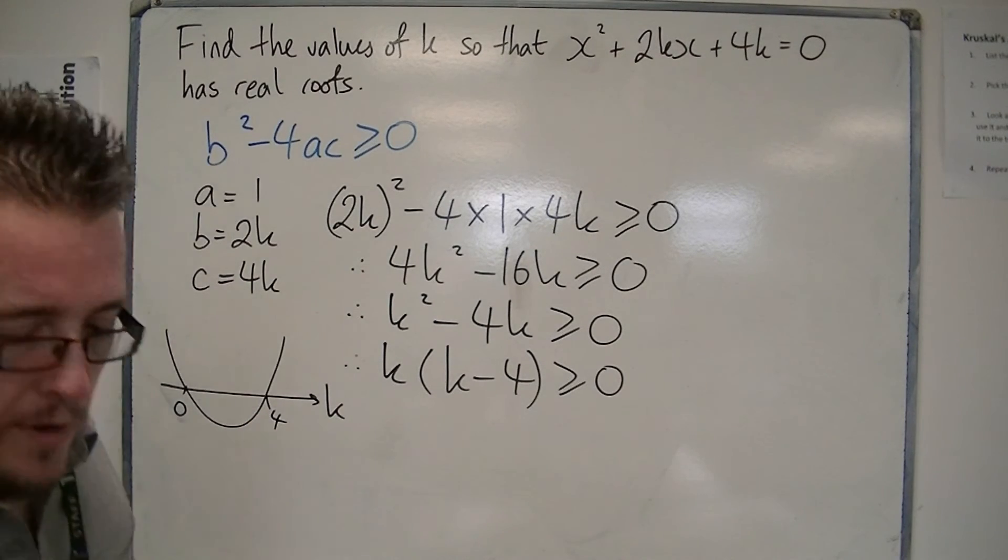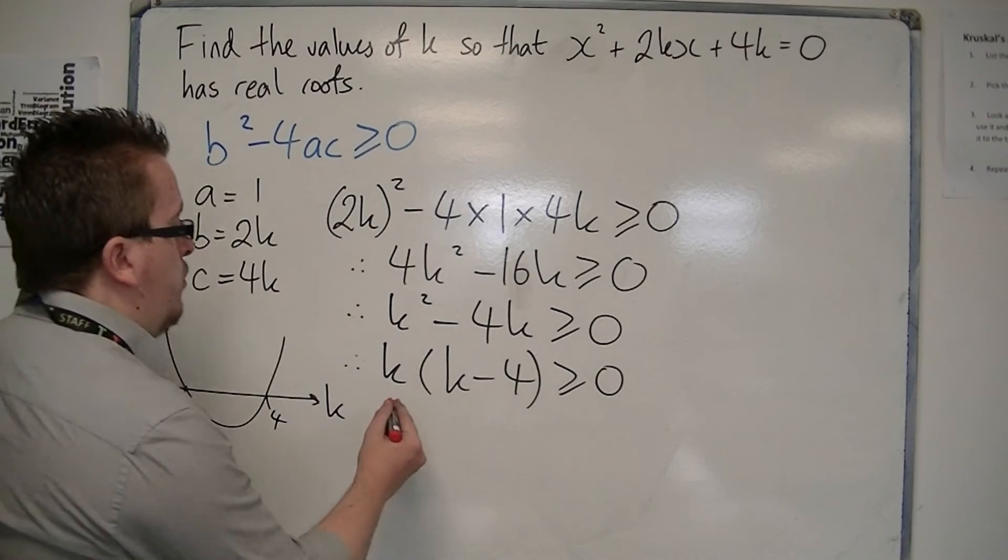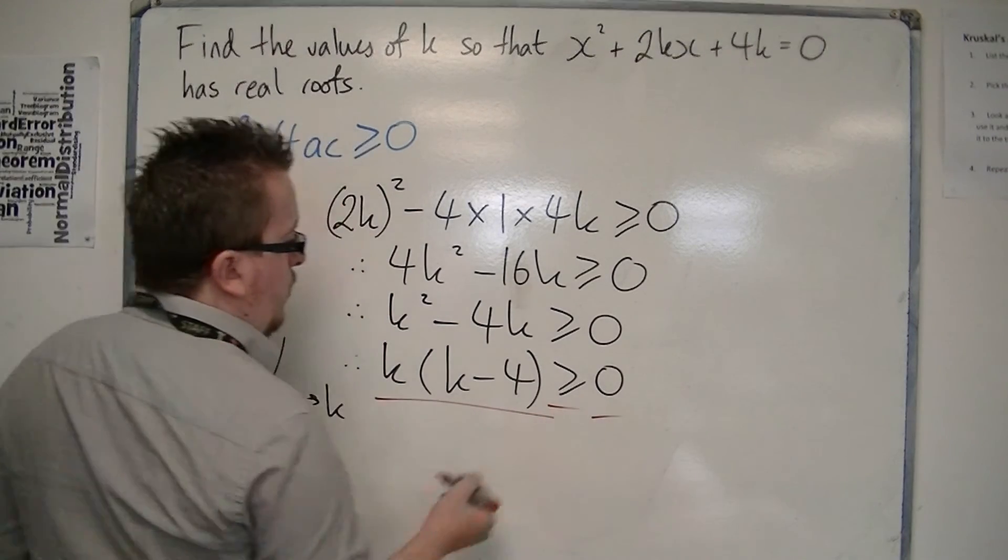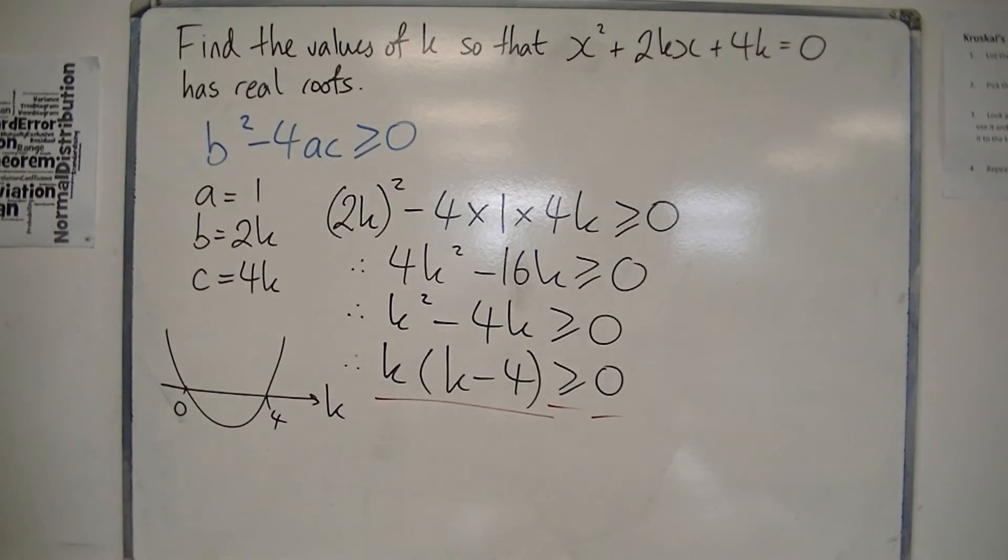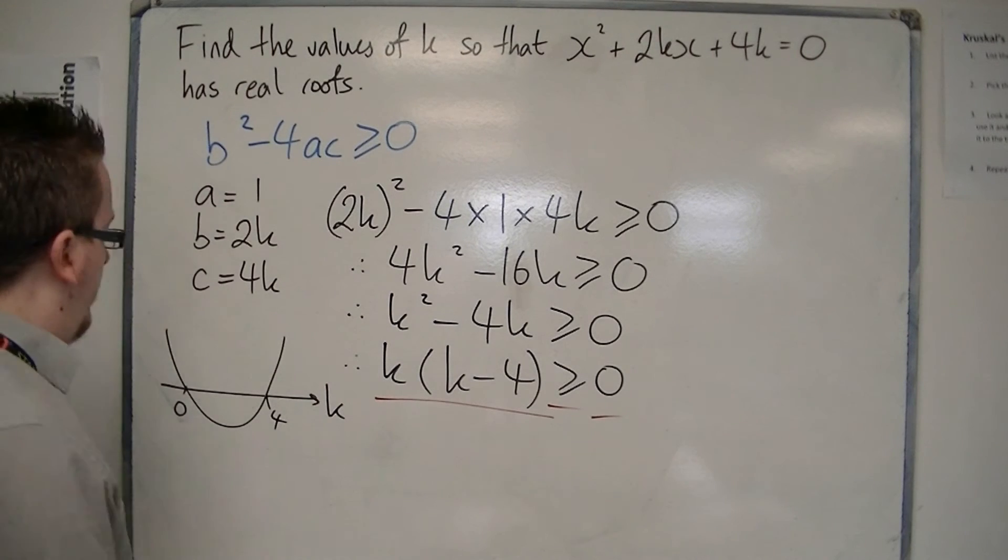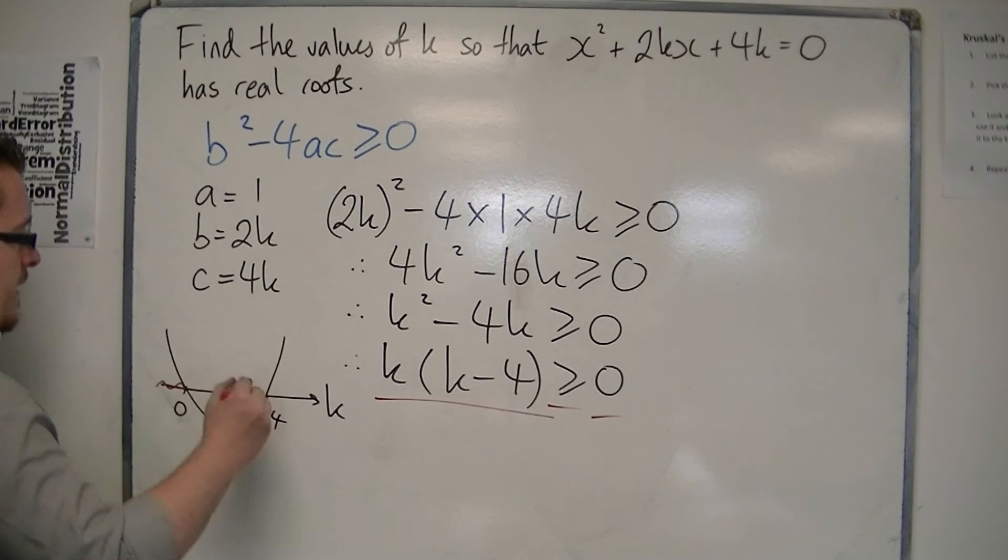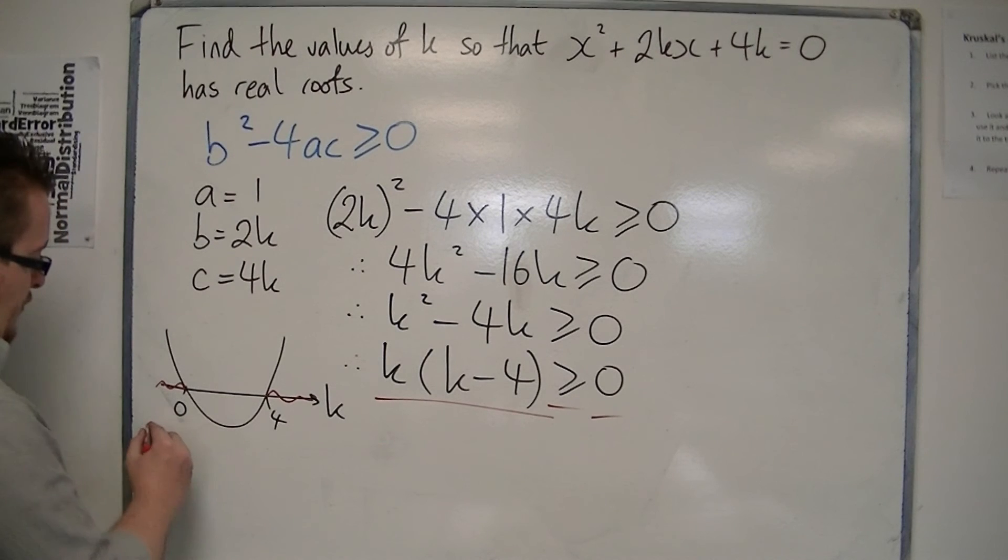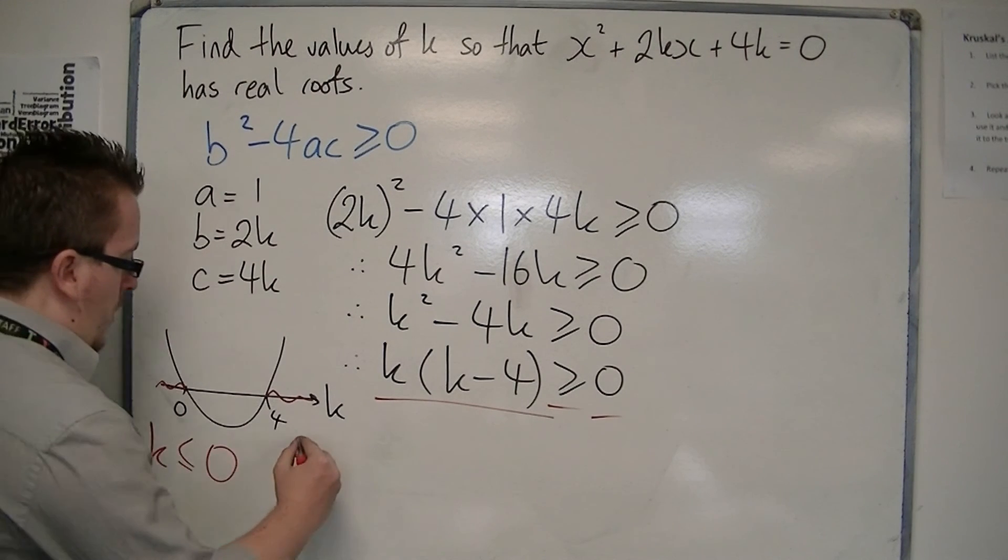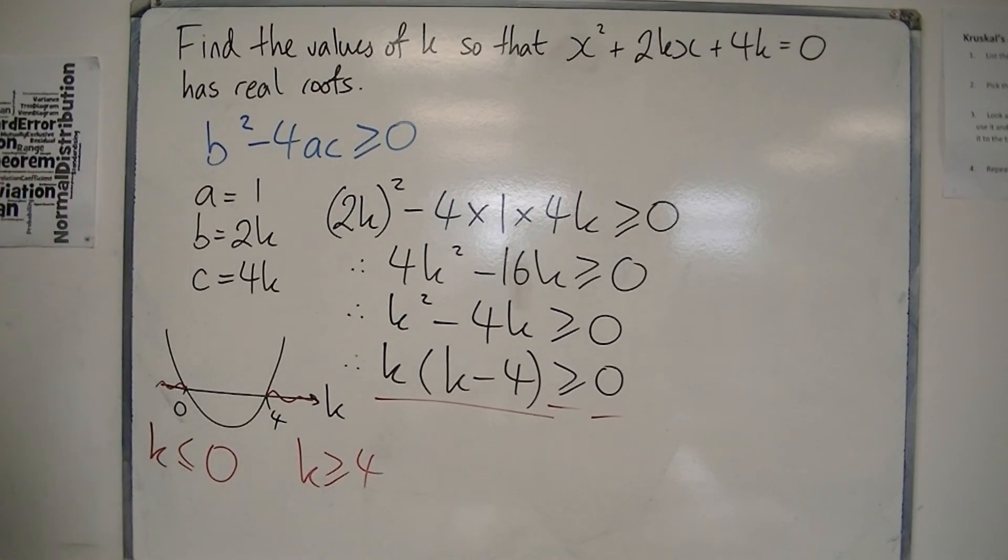And we're being asked, where is the parabola above or equal to y equals 0, where is it above or equal to the k axis, and it is above it here and here. So, two distinct inequalities, k is less than or equal to 0, and k is greater than or equal to 4.